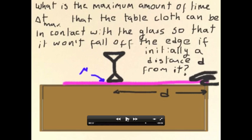Why should the time of contact between the tablecloth and the glass be important? Well, for as long as the tablecloth is in contact with the glass and you're pulling on it, the tablecloth is applying a force to the glass which is going to make it move. It's only when the tablecloth has been removed from under the glass that the glass is finally going to decelerate and come to rest. So evidently, the time that the tablecloth is in contact with the glass is a crucial parameter.